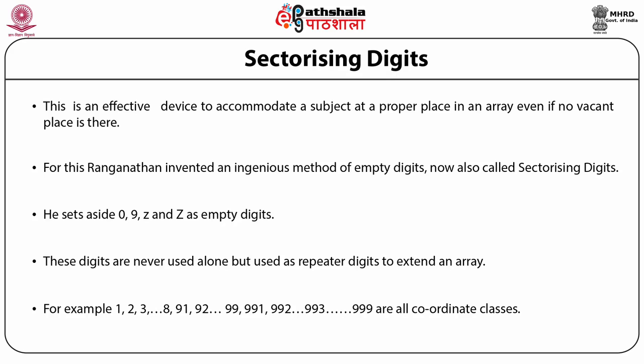If position 8 is filled, then new entities can be given notations 91, 92, and further 99, 991, 993, 999, and so on. This means that 1, 2, 3... 8, 91, 92, 93, 94, 95, 96, 97, 98, 99, 991, 993, 999 are all coordinate classes of equal rank. In this way, the array can be extended to any extent and there is scope for hospitality to any level.